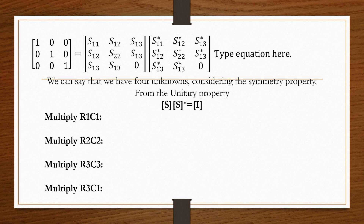There are four unknowns in the scattering matrix: S11, S12, S13, and S22. To find these unknowns, we apply the unitary property — when we multiply any matrix with its complex conjugate, the answer is a unitary matrix (diagonal elements equal 1, remaining values are zero). So we multiply the scattering matrix of H-plane T by its complex conjugate to obtain the unitary matrix.